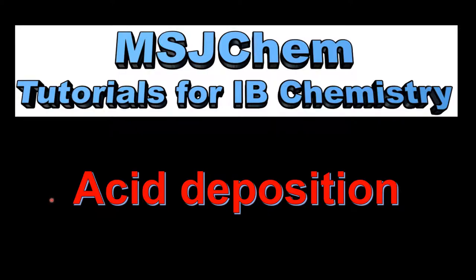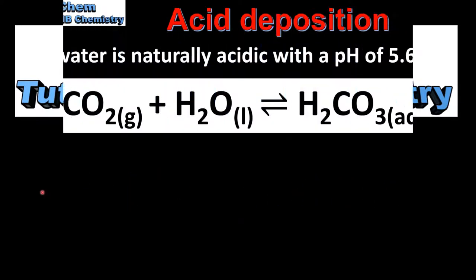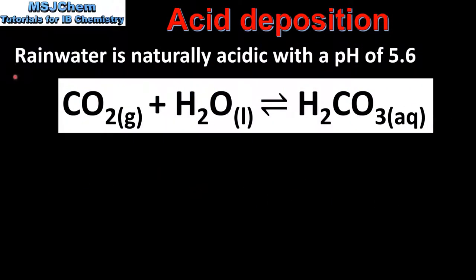This is MSJChem. In this video I'll be looking at acid deposition. We'll start the video by looking at the acidity of rainwater. Rainwater is naturally acidic with a pH of 5.6. In this equation we see the reaction between carbon dioxide and water to produce carbonic acid, which is a weak acid. This reaction occurs in the atmosphere where atmospheric carbon dioxide reacts with water, meaning that rainwater is naturally acidic.